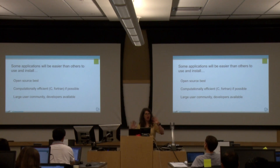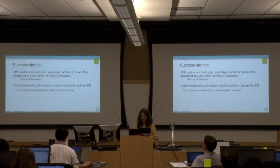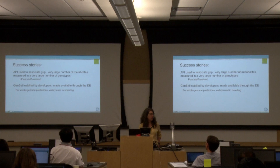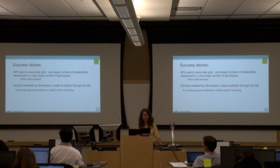R as a system has very large numbers of users and lots of people who know how to make it work, though for any individual R packages you'll want to check how widely they're used. As a couple of success stories: an early version of the API was used to do a very large association analysis with metabolites in the NAM genotypes in maize — a very large number of genotypes — and we assisted with the software engineering needed to make that run on the high performance compute infrastructure. Another example for prediction is GenCell, where the developers helped with the install and made it available in the discovery environment.